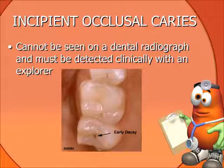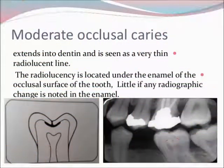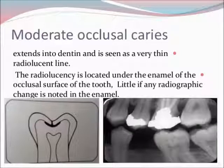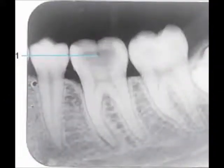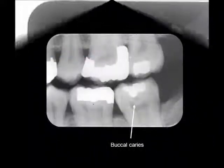Incipient occlusal caries cannot be seen on a dental radiograph and must be detected clinically with an explorer. Moderate occlusal caries extends into the dentine and appears as a very thin radiolucent line under the enamel of the occlusal surface. Severe occlusal caries extends into the dentine and appears as a large radiolucency extending under the enamel of the occlusal surface.